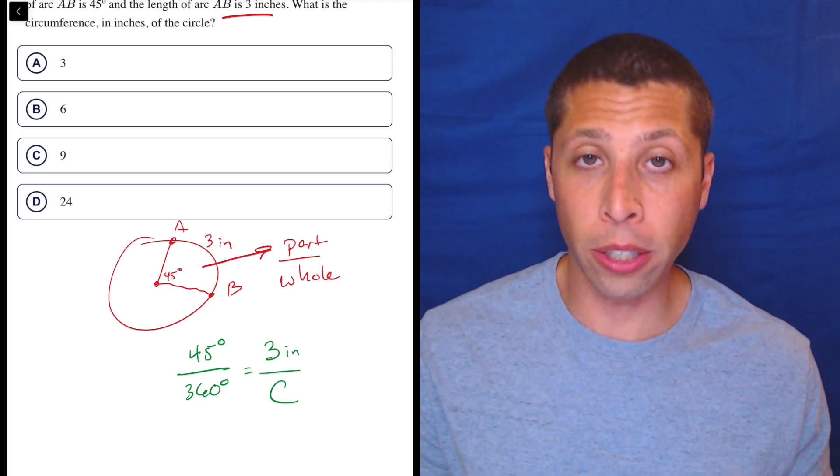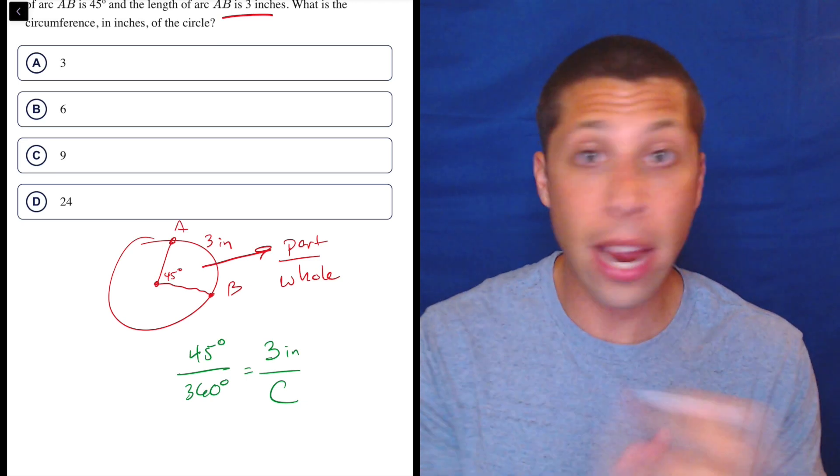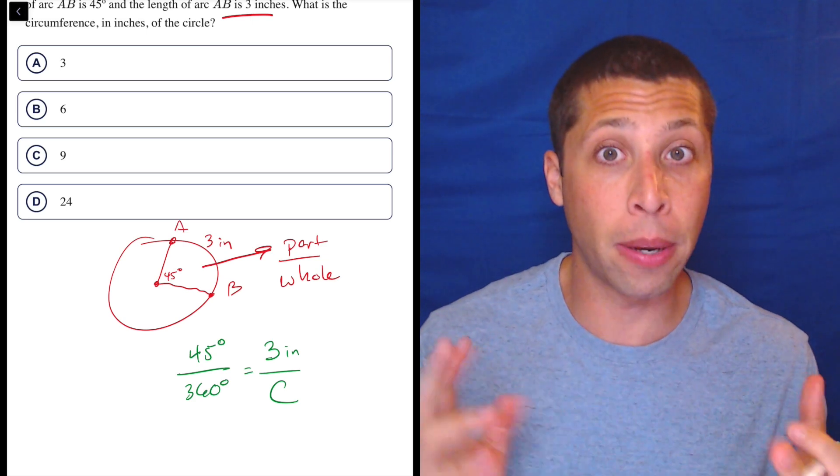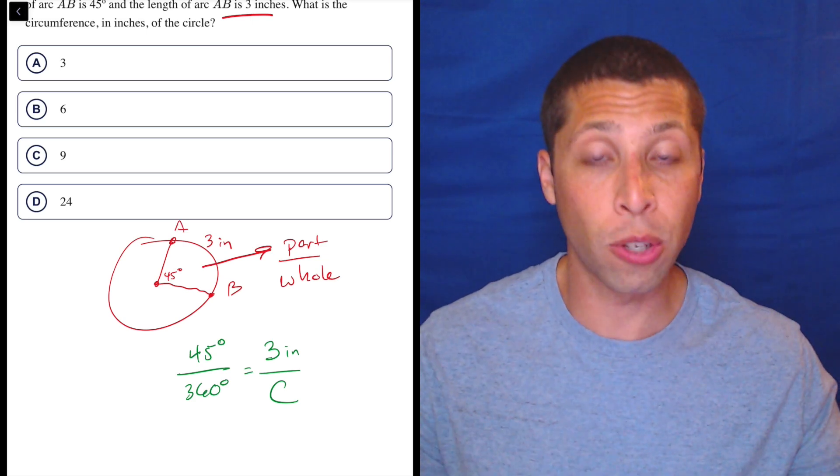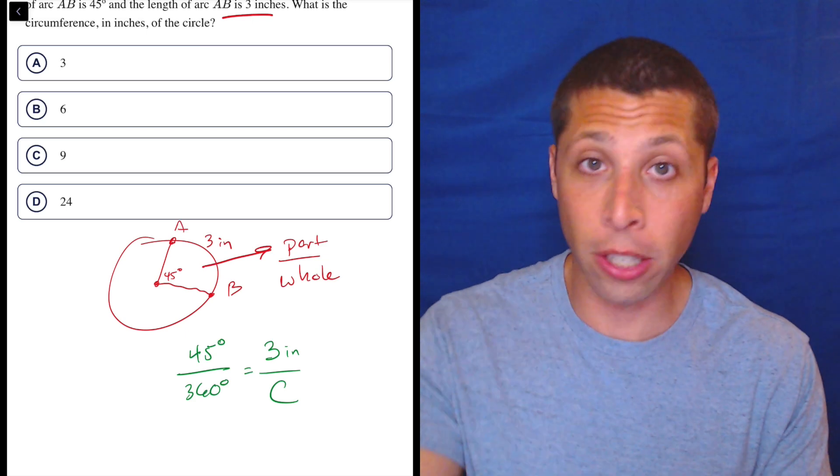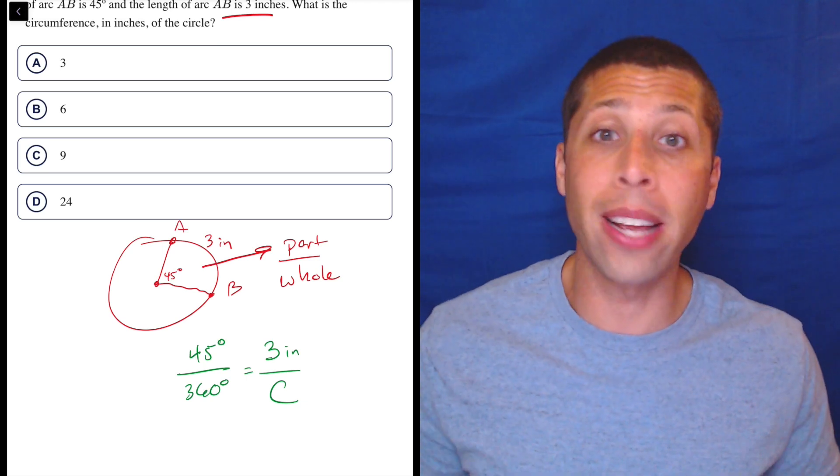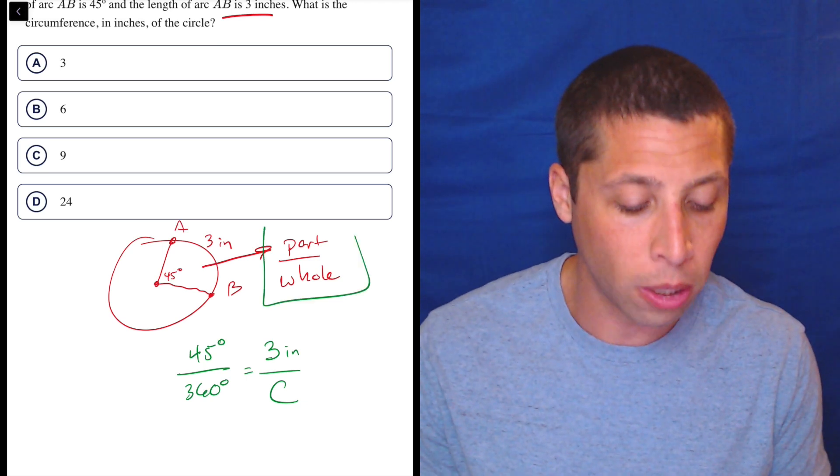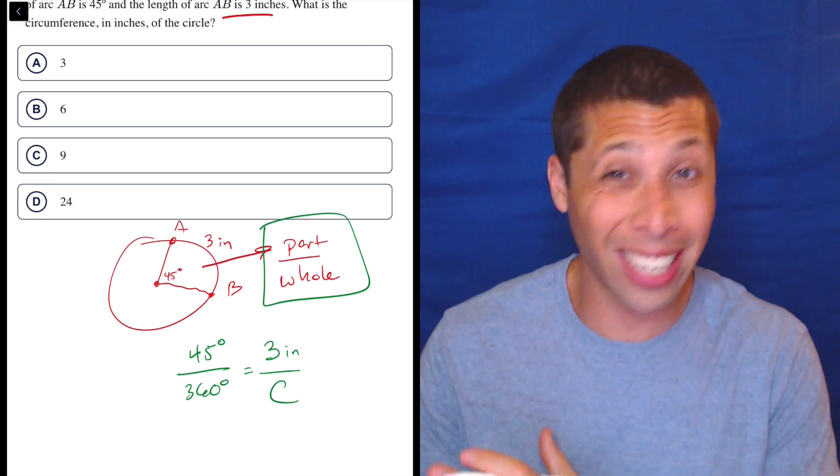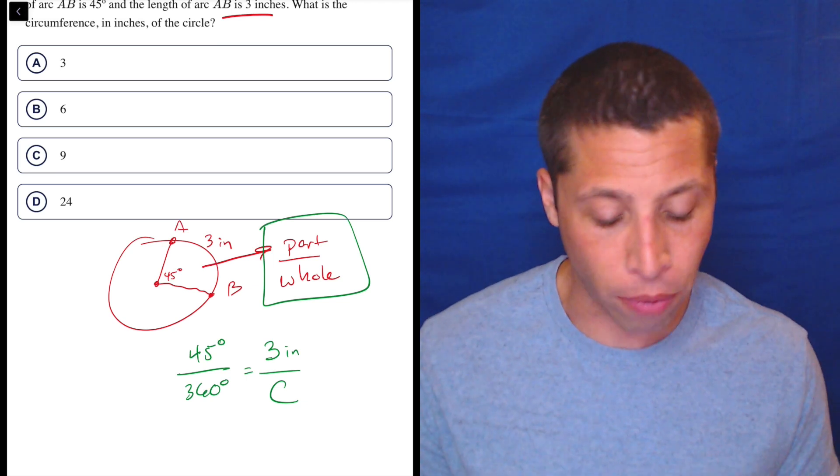There are formulas that you can learn for the arc length, the area of a sector, things like that, but this formula does it all. So we don't really care whether we're given an arc or a circumference or an area. No matter what, the fraction way is going to work. That's why part over whole is the better way to think about this. If you've got a slice of a circle, you're probably setting up some sort of fraction like this.